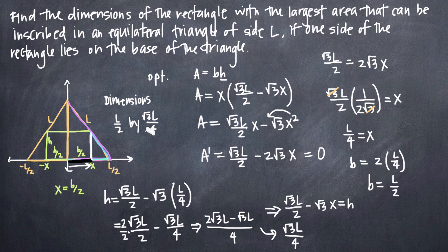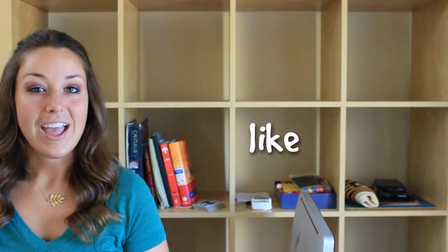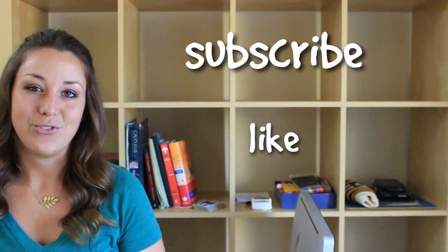Those are the dimensions of the rectangle with the largest area inscribed in an equilateral triangle of side L. If we're ever given an actual value for L — say, 12 — we can simply plug it in to immediately find the dimensions. I hope you found that video helpful. If you did, like this video and subscribe to be notified of future videos.